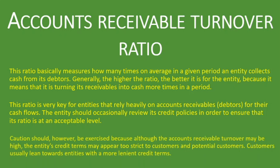Caution should however be exercised because although the accounts receivable turnover may be high — which is what every entity would strive for — the entity's credit terms may appear too strict to customers and potential customers. Customers usually lean towards entities with more lenient credit terms. Although we want the ratio to be high, if it is high it may mean our credit policies are very strict, and some customers may go to other suppliers who are more lenient. So we don't want the ratio to be just high — we also want to monitor it against the sales and customers we are able to retain in line with those credit terms.